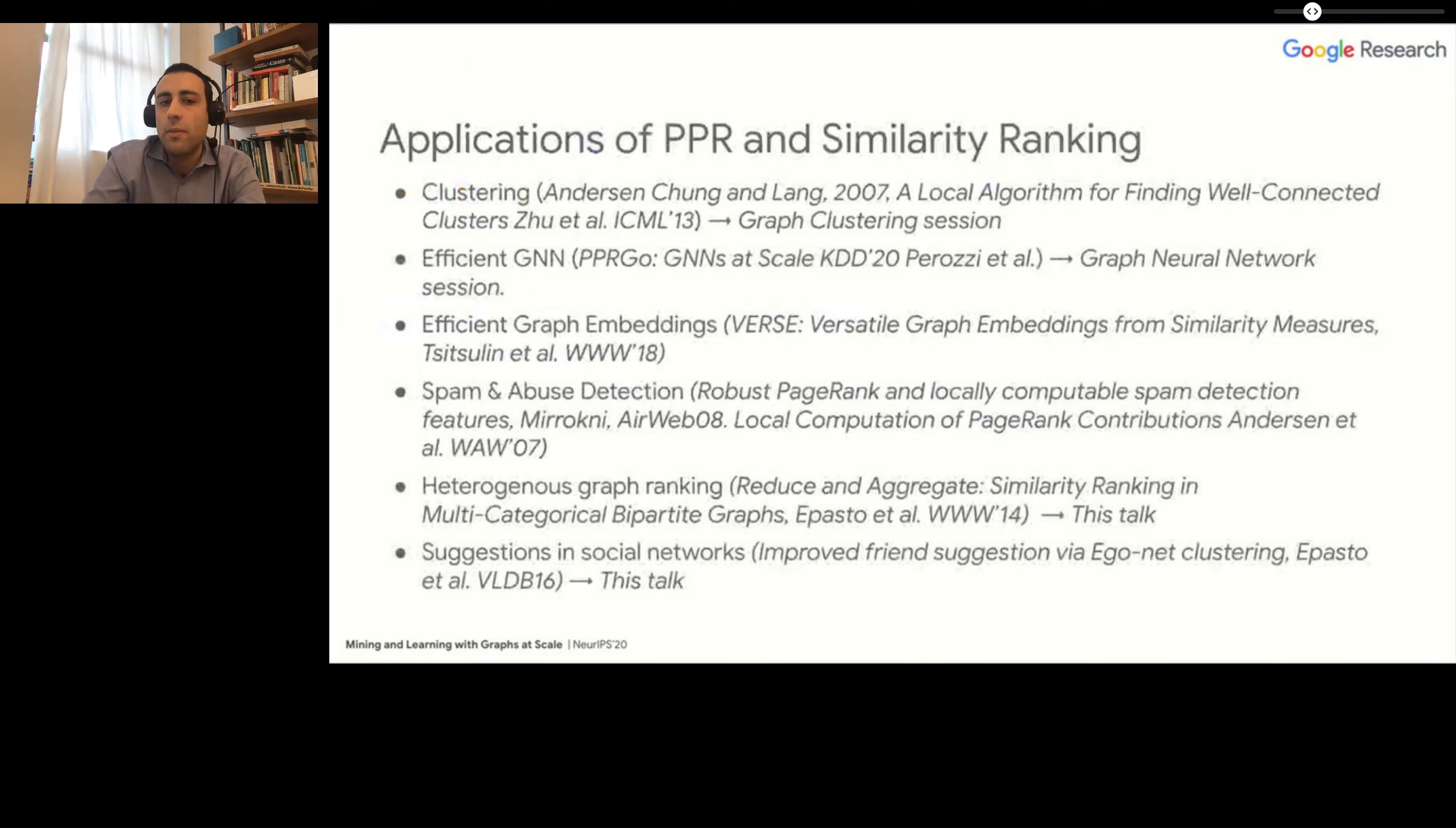One application of PPR, a direct application, is clustering. We will see more about graph clustering in the graph clustering session. So if you're interested, please go there. Also, if you have PPR, you can use PPR rankings to speed up the computation in graph neural networks. This is something that will be shown in a talk about a recent paper in the graph neural network session.